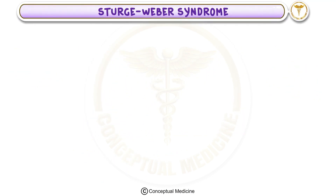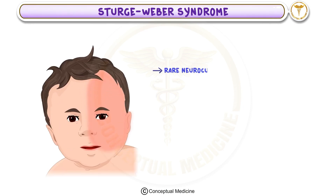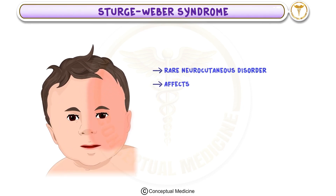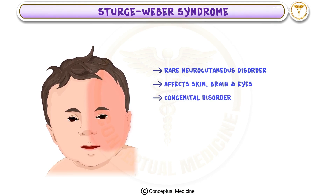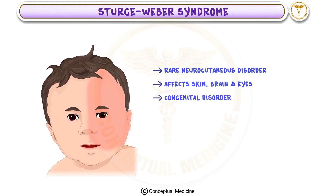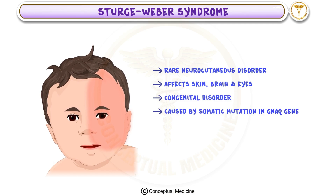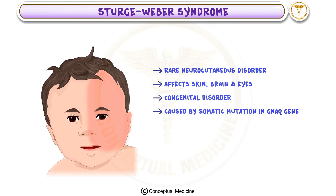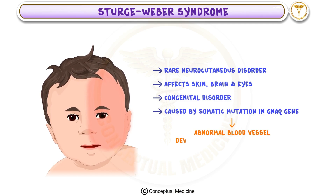Sturge-Weber Syndrome is a rare neurocutaneous disorder that affects the skin, brain, and eyes. It is a congenital disorder caused by a somatic mutation in the GNAQ gene, leading to abnormal blood vessel development in the brain, skin, and eyes.